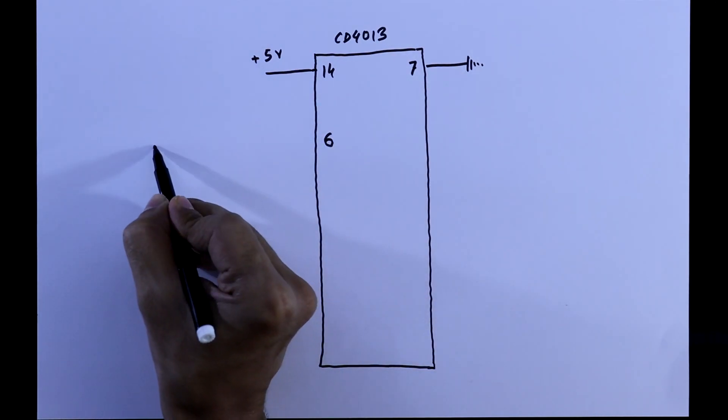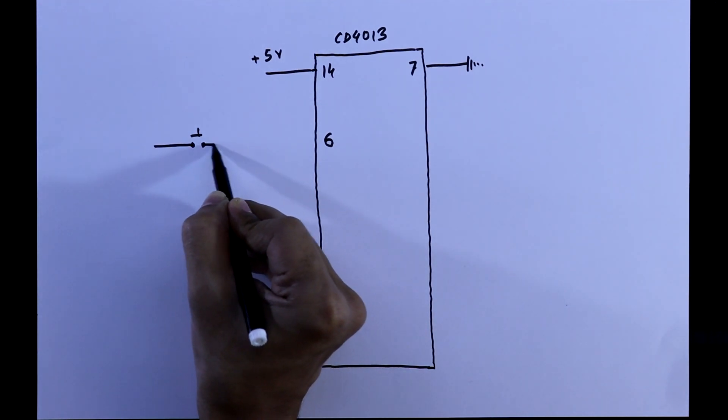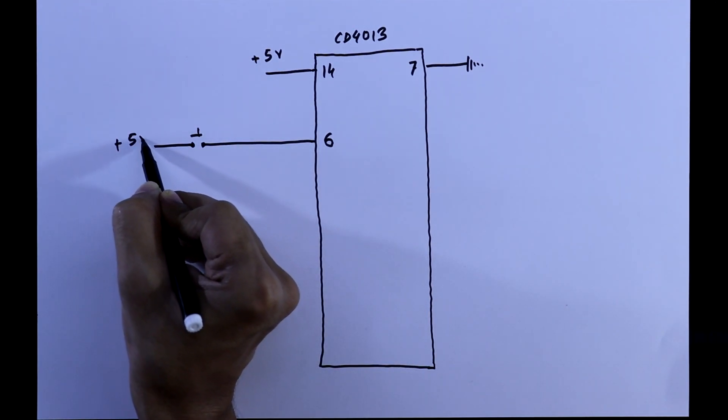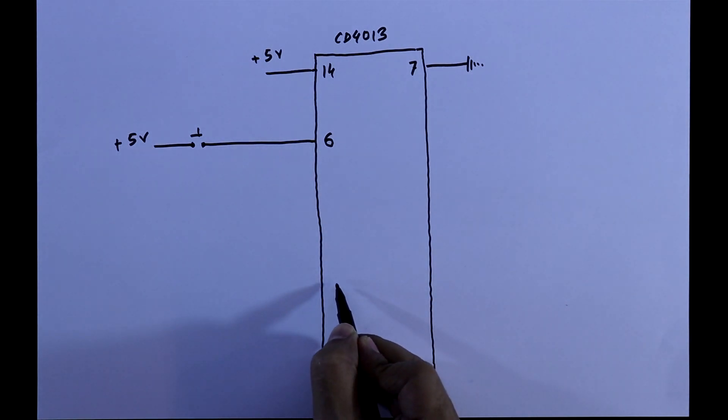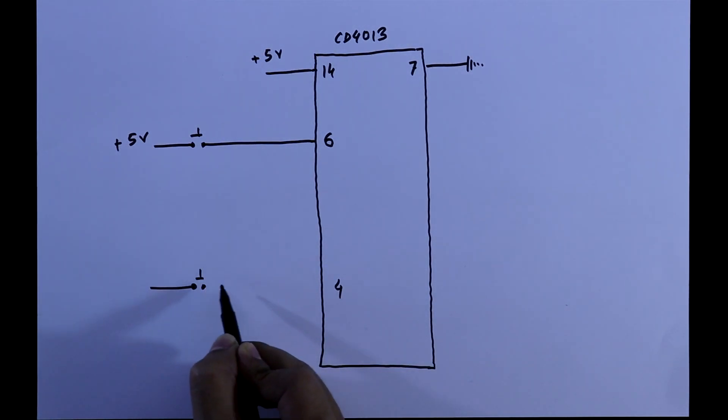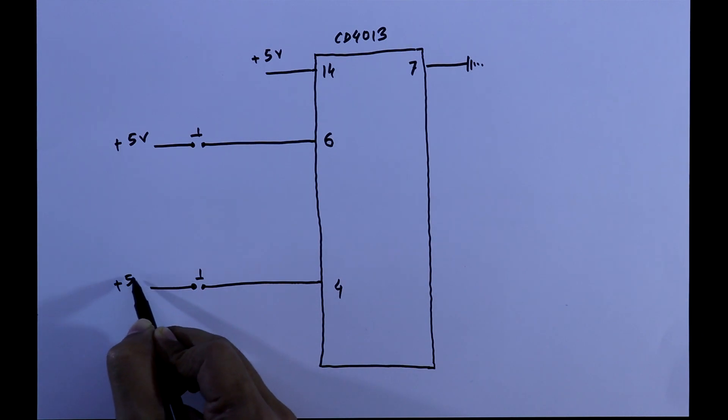With pin 6 we have to connect one push button switch, and the other pin of the switch is connected to plus 5V. With pin 4 we have to connect another push button switch, and the other pin is also connected to plus 5V.